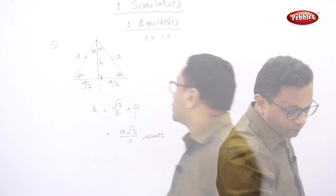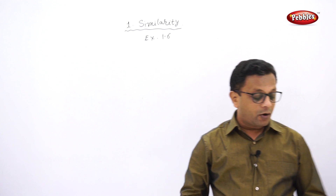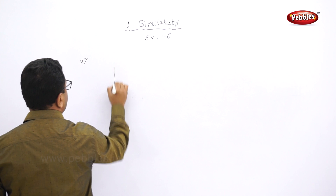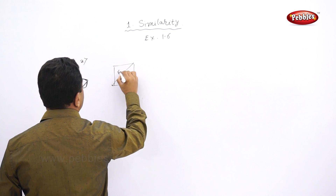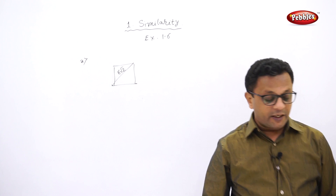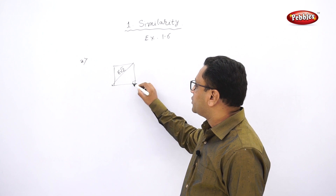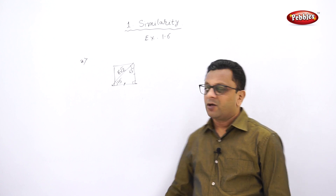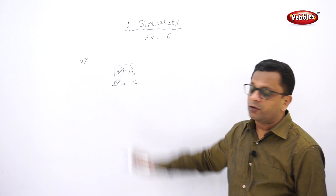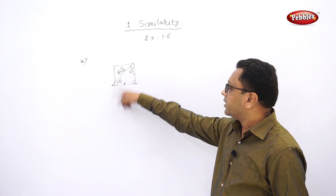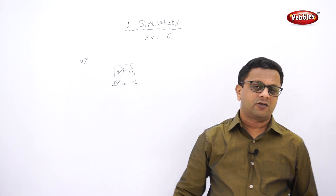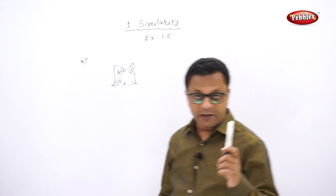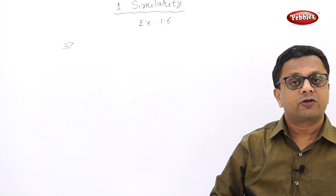Second question, which appeared in the March 2012 exam for one mark: find the side of a square whose diagonal is 16√2 centimeters. The square is given, diagonal is 16√2 cm, and you have to find the side. We know that this is 90 degrees and these two sides are equal, so the angles are 45 and 45. The side opposite to 45 degrees is (1/√2) × hypotenuse — in this case the diagonal. Please pause your video and find the answer. Don't forget to write the unit centimeters.